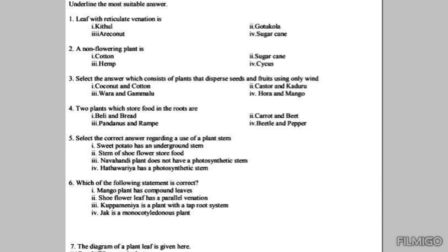What are compound leaves? If the leaf blade of a leaf is completely divided into small leaf-like parts called leaflets, that type of leaves with leaflets are called compound leaves. The best examples are coconut, kathurumurunga or sesbania, and tamarind.